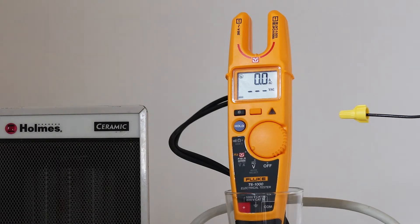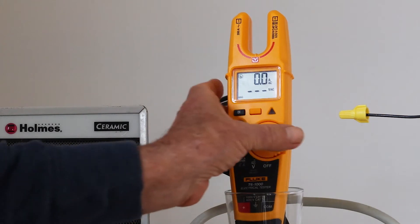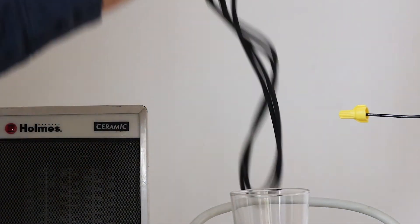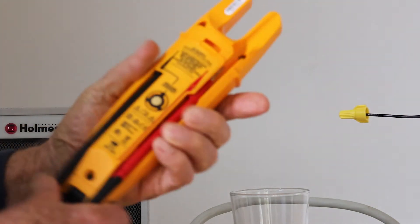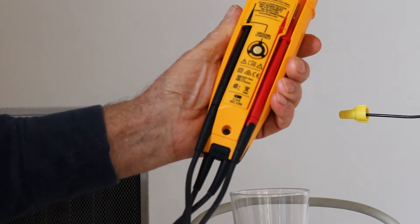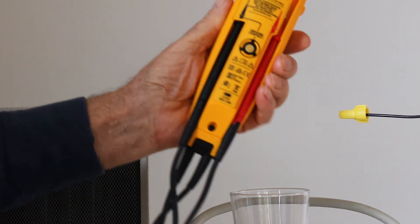The Fluke non-contact electrical tester also operates as a conventional multimeter. Here are the leads. Just touch them to whatever you want to measure and use it like a regular multimeter.